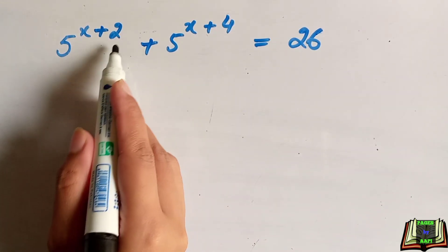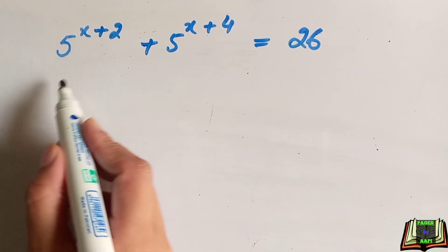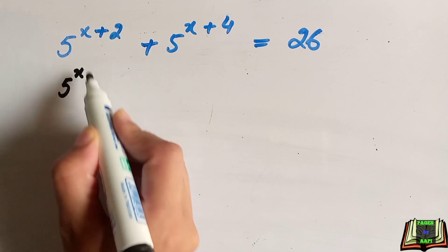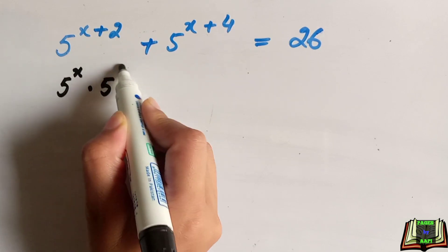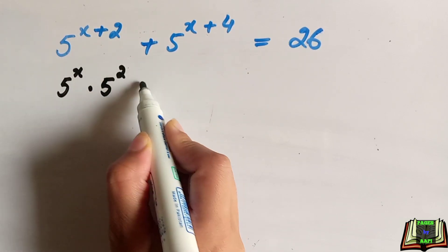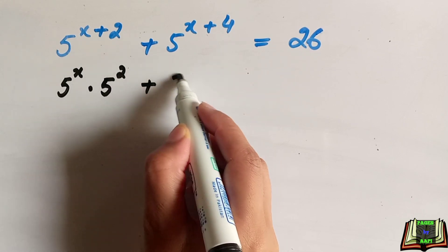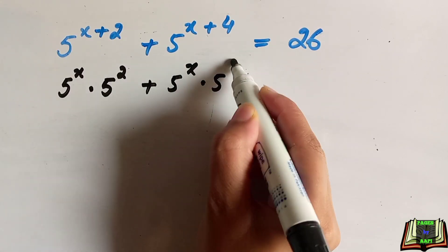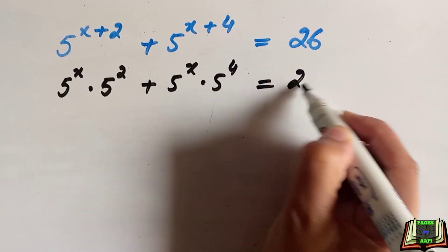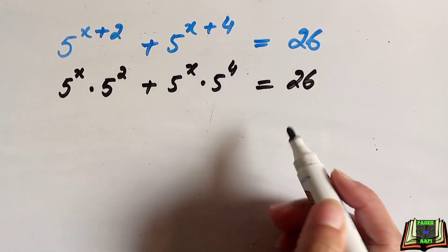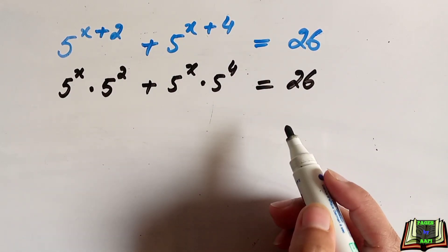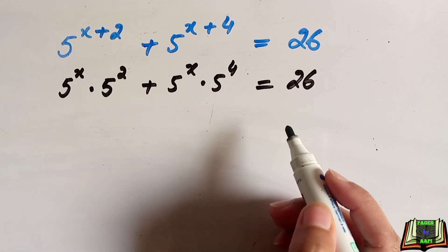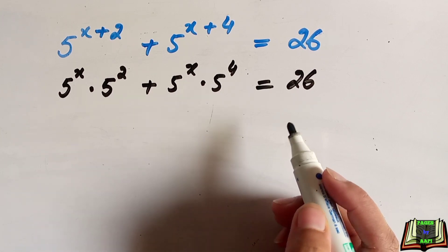First, we can write 5 to the power x plus 2 as 5 to the power x into 5 to the power 2, and similarly 5 to the power x plus 4 as 5 to the power x into 5 to the power 4, all equal to 26. Here we use the law of indices, which tells us that multiplication means we are adding their powers.